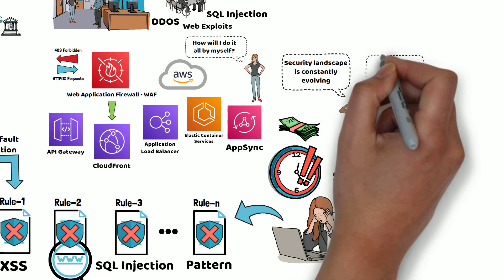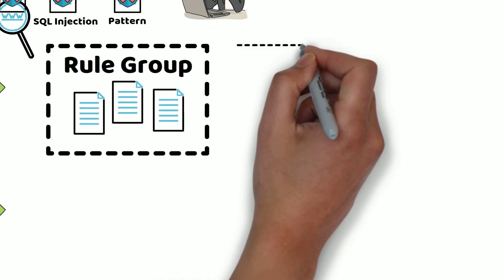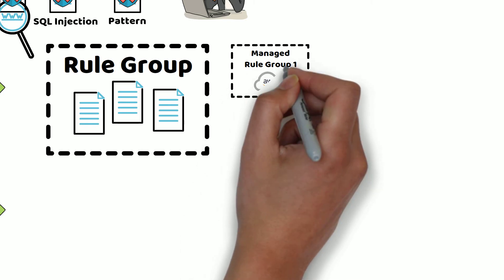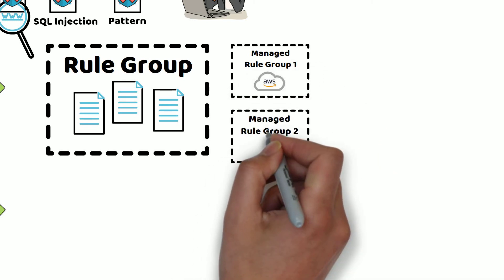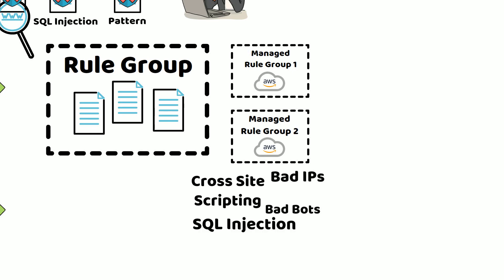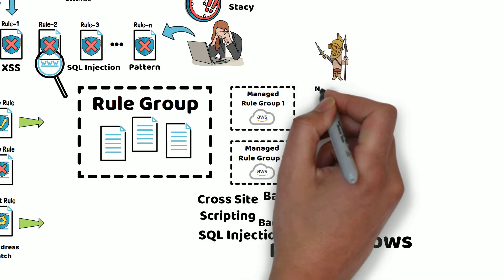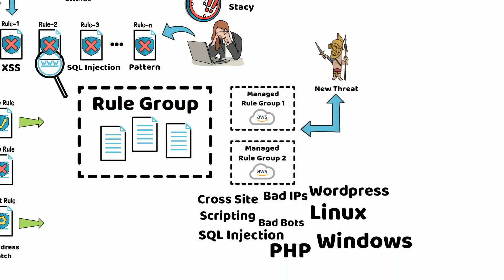Stacy advised her to look into AWS Managed Rules. AWS Managed Rule Groups are collections of predefined, ready-to-use rules that AWS maintains for you. These managed rules are designed to protect against the most common threats such as cross-site scripting, bad IPs, bad bots, SQL injection, and various WordPress, PHP, Linux, and Windows Operating System exploits. And when a new threat is found, AWS will update the Managed Group automatically.